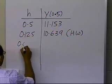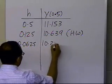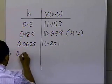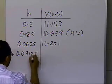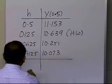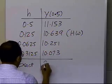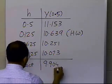And at 0.0625, I got 10.251, and for 0.03125, again halving the step size, I got 10.073. And of course we know the exact value here is 9.9046.